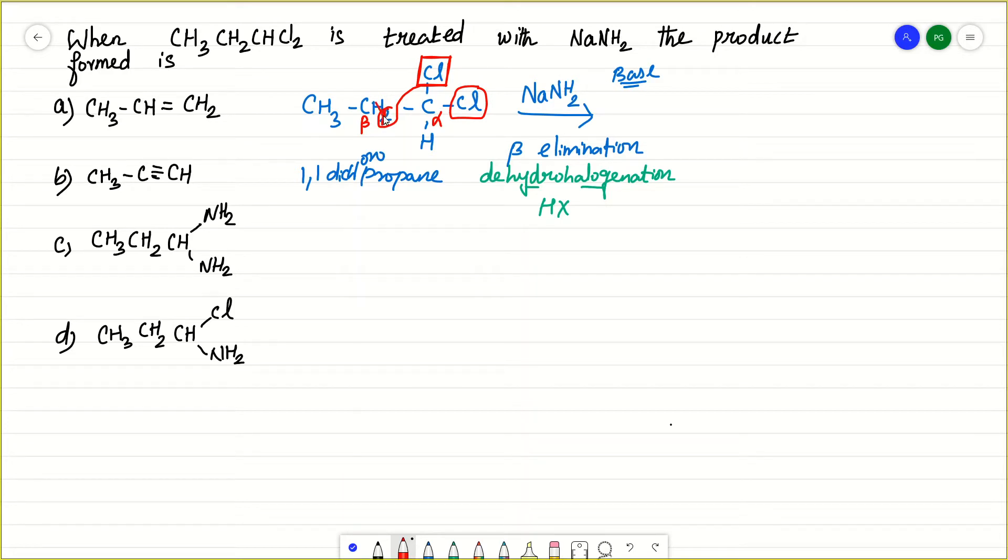For example, if you are writing this as H and this H, this HCl will be removed and this HCl will be removed. Cl from the alpha carbon and H from the beta carbon will be removed. What will be remaining? This CH3 is not disturbed, and here it is C. Both the hydrogens are removed and here both the chlorines are removed.